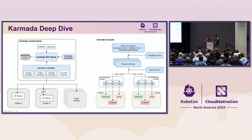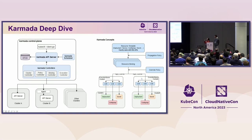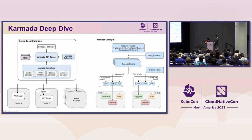It also shows the Karmada workflow. As mentioned, it uses resource templates exactly the same as Kubernetes APIs. The propagation policies define how workloads are propagated to member clusters. The policy controller binds those propagations with resources accordingly. After resource bindings are generated, the bind controller applies override policies via JSON patch and generates work objects into the specific namespace. Then the propagation controller takes the actual propagation to the member cluster.